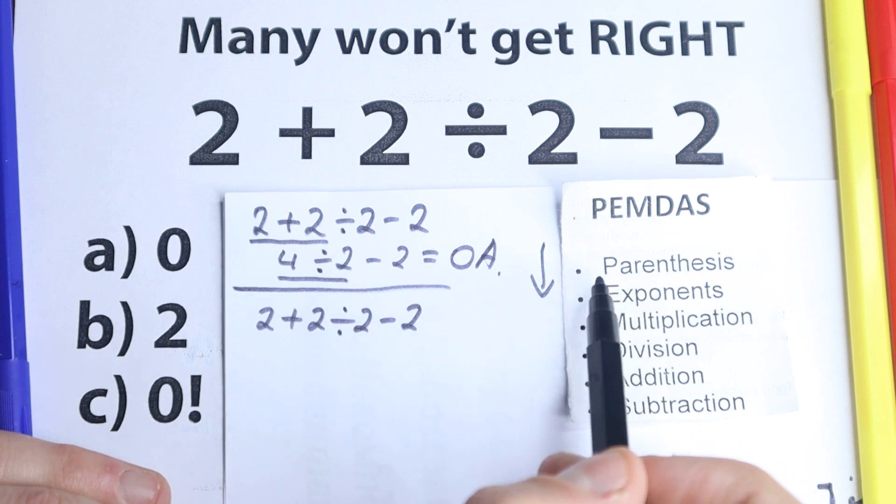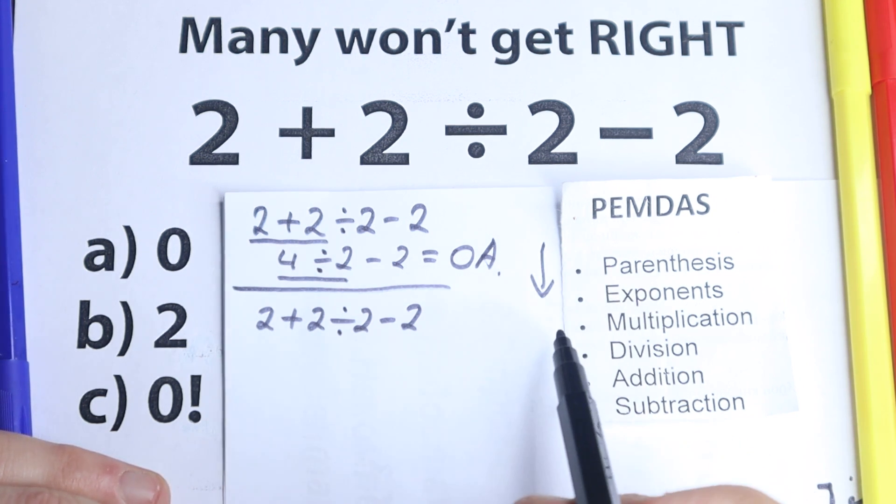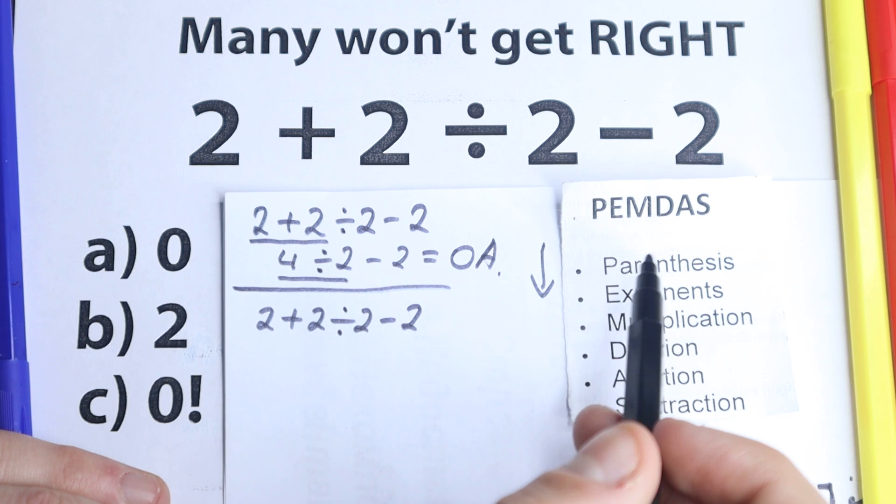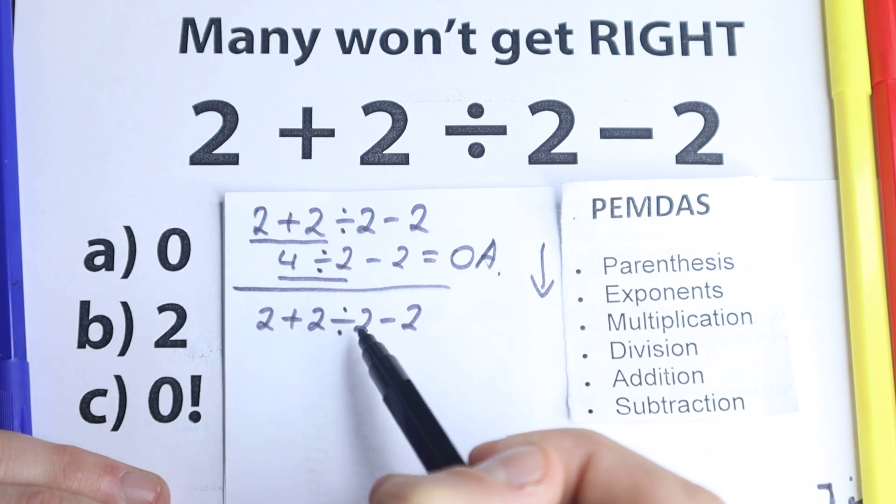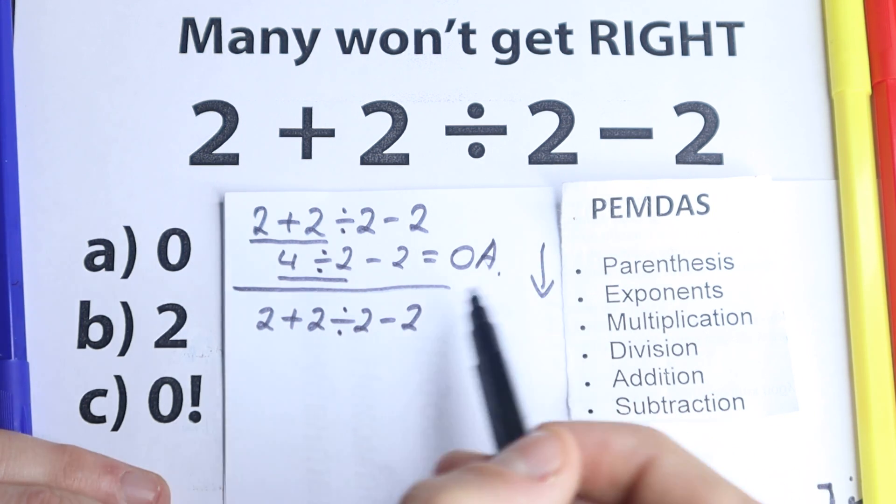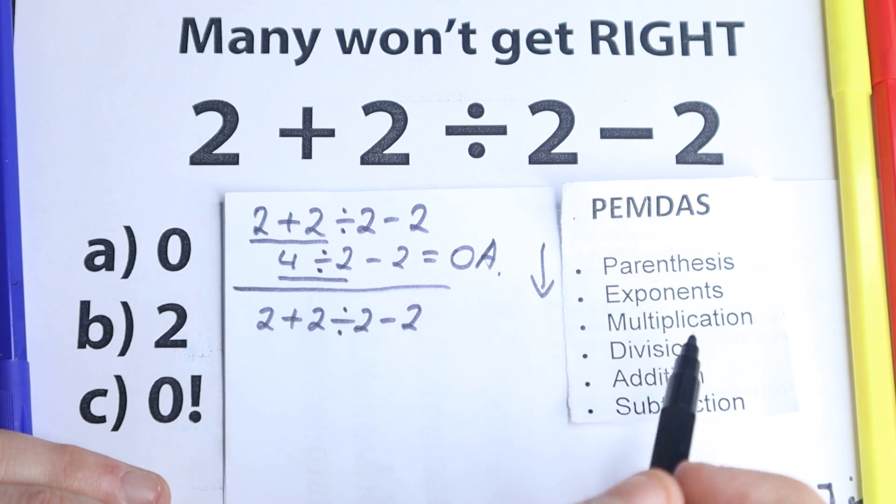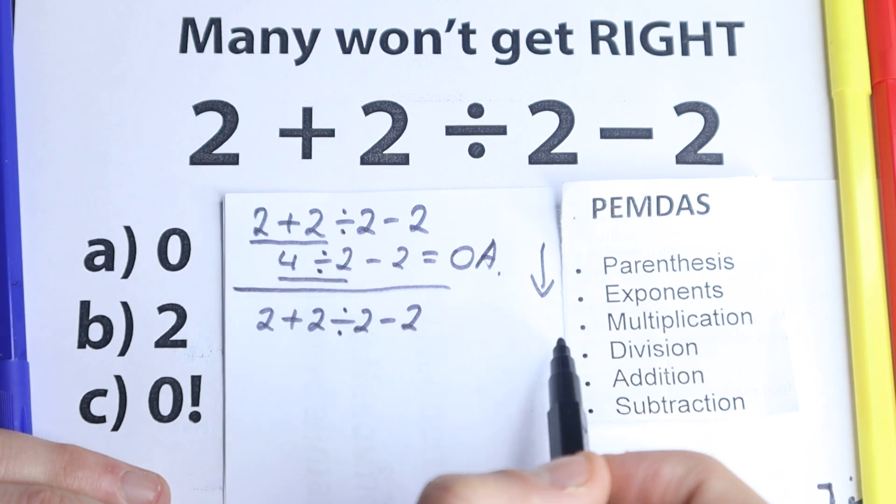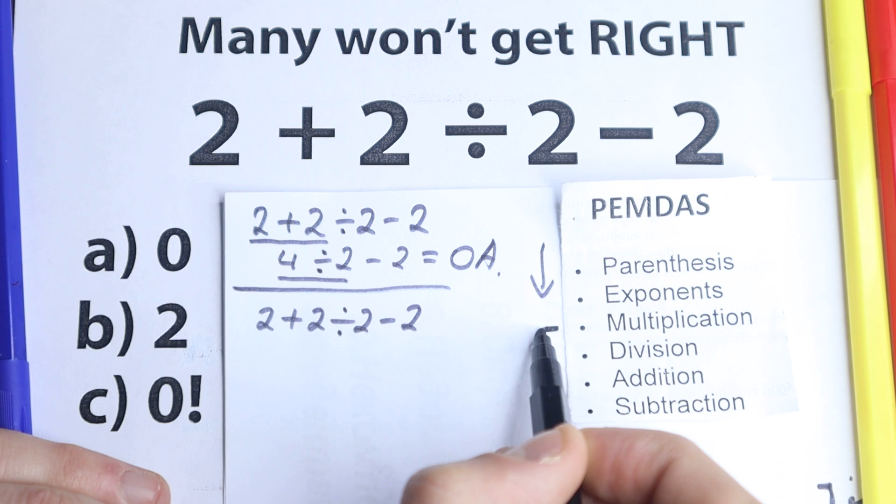So the first step according to PEMDAS is parentheses. And now we need to scan, are there any parentheses right here? No, I don't see any of those. What about exponents? I don't see any exponents. So let's go to the next step. We just skip these two steps. The next step, multiplication and division part.